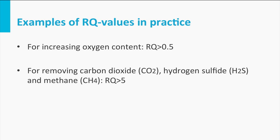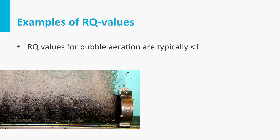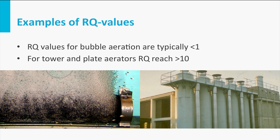To prevent a limitation in the removal of carbon dioxide, hydrogen sulfide or methane, a minimum Rq of 5 is needed. When a high level of removal is desired, a higher Rq value is required. This is for example the case for removing toxic volatile compounds like chloroform and trihalomethanes, which can be present in groundwater because of pollution. In the case of bubble aeration, the Rq value is typically smaller than 1, and in the case of tower aerators and plate aerators, Rq values of 10 and higher are applied. The difference in Rq values causes, to a great extent, the differences in efficiency of these systems for specific gases.